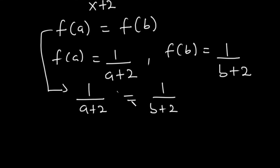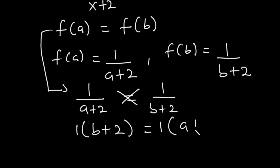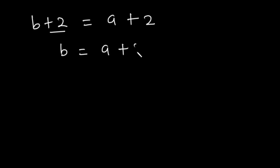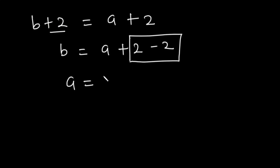Now let's cross-multiply. We get 1×(B+2) = 1×(A+2). Expanding: B+2 = A+2. Transposing the 2s, we get B = A+2−2, and since A+2−2 = 0, it simplifies to A = B.